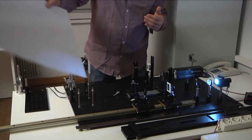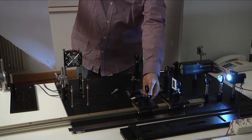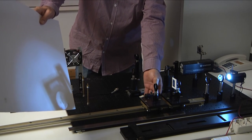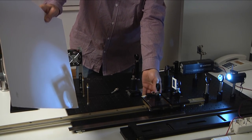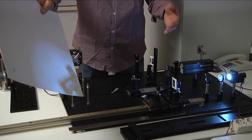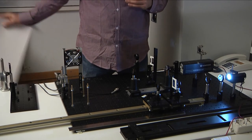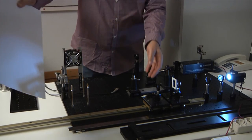After that, we can play. For example, if the object is placed less than the focal distance of the lens, you know that we will have a virtual image here.